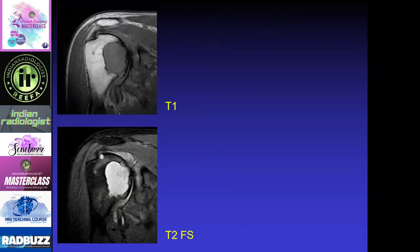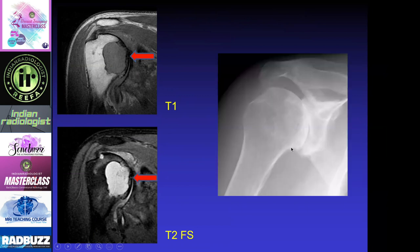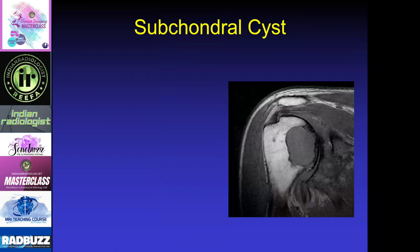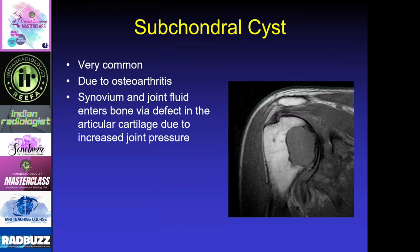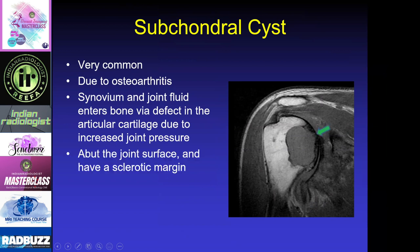Subchondral cysts are lesions we see all the time — this is probably one of the largest ones. It has a fluid signal on both T1 and T2-weighted sequences, associated with really bad osteoarthritis at the glenohumeral joint, and the lesion goes right up to the subchondral surface. On the radiograph it's actually kind of hard to see. Subchondral cysts are very common due to osteoarthritis — once cartilage is destroyed, fluid goes through crevices within the bone and forms large cysts due to increased joint pressure. The cyst should always abut the joint surface, and you want to look carefully for a connection to the underlying bone.